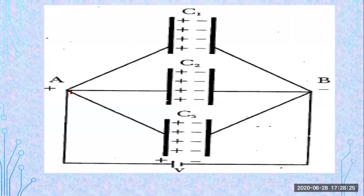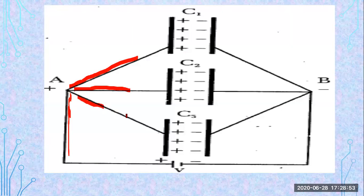Let's understand this with a daily life example. If there is a single pipeline and it is allowed to break into three lines, the amount of water flowing in each line will be different. If you sum up all three, it will equal the main line. The water from the single pipeline is divided into three branches, so it will be split into three portions.